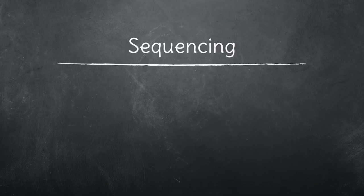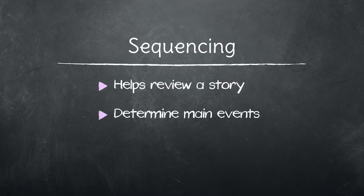Sequencing is used when your class has read a story. It uses a chart to help review the story by determining the main events of the story and putting the events in order.